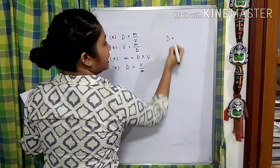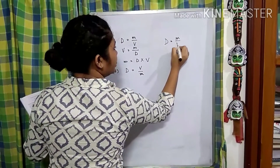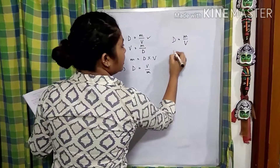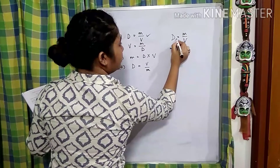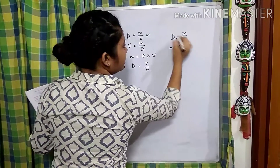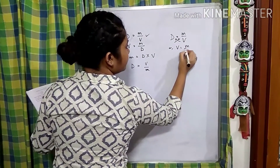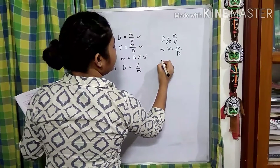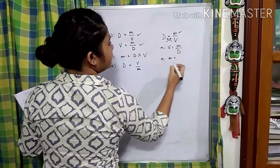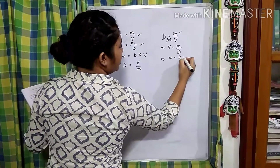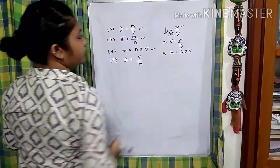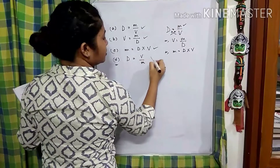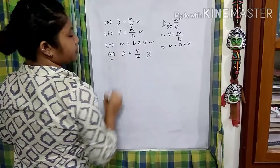If you recall, density equals mass per volume. We will tally which are the right options. Option A is right. When we find volume, we cross multiply — V goes up and D comes down, so option B is also right. When we find mass, V goes up and it becomes D into V, so option C is right. Therefore option D, that is D equals V by M, is not possible. So option D is the correct answer.